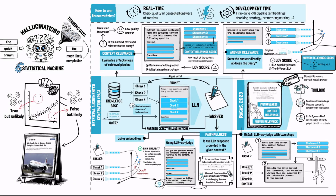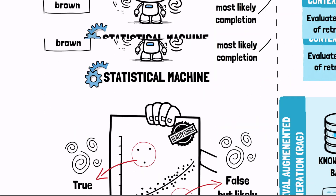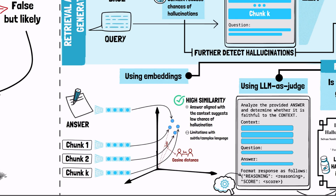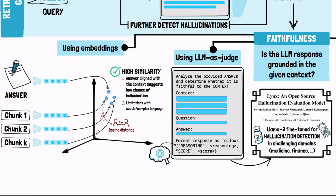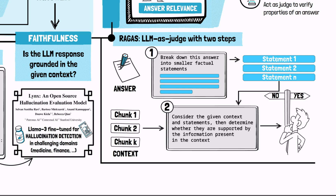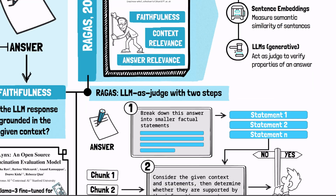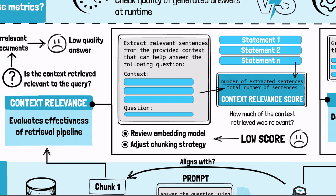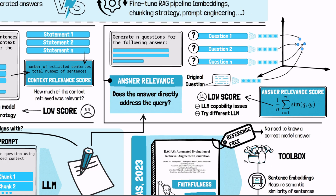In summary, hallucinations are a by-product of how LLMs work, but they can be somewhat managed. Faithfulness checks, either through LLMs acting as judges or embedding-based methods, are essential tools for detecting hallucinations. Frameworks like RAGAS provide a set of metrics beyond faithfulness — such as context and answer relevance — that can be used to evaluate and improve the performance of a RAG pipeline.